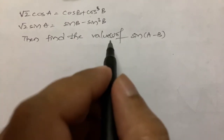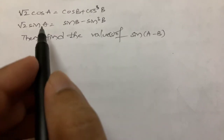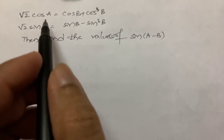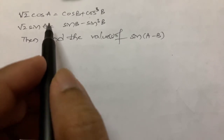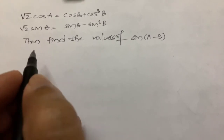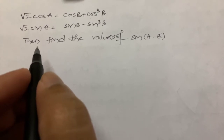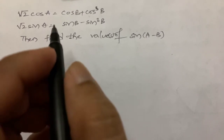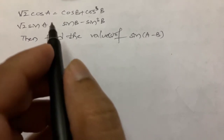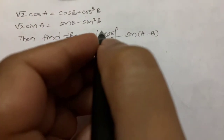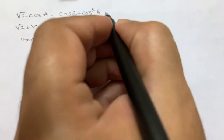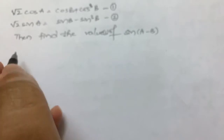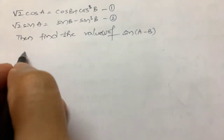To find sin(A - B), we first need to find angle A and angle B using these two equations. We will label the first equation as 1 and the second equation as 2. I will square the first equation.